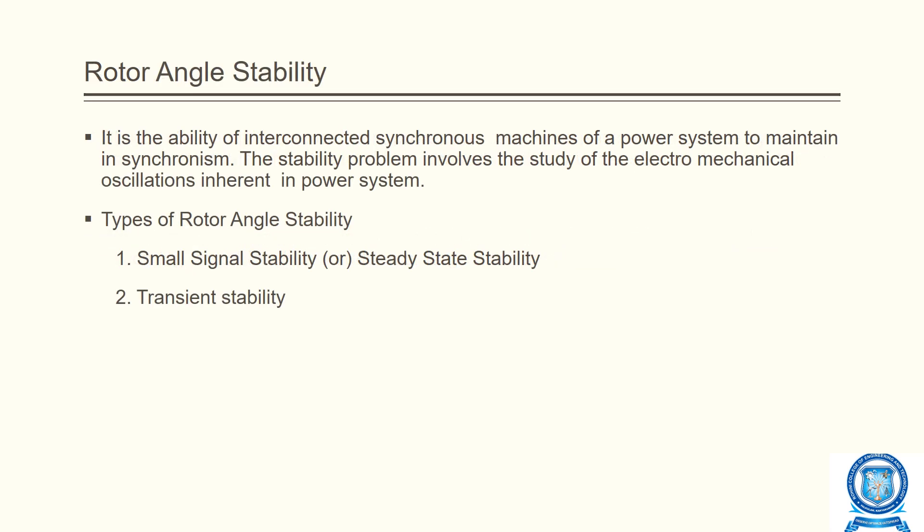Rotor angle stability is concerned with the ability of an interconnected synchronous machine in a power system to remain in synchronism under normal operating conditions and after being subjected to a disturbance. There are two types: small signal stability and transient stability. Small signal stability is otherwise called steady state stability.